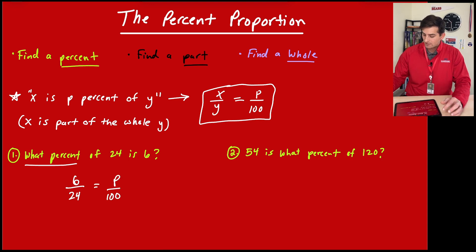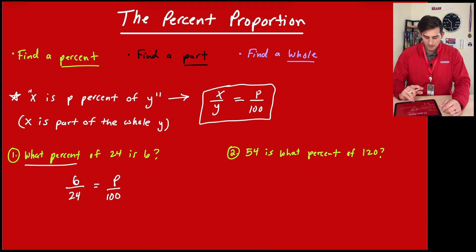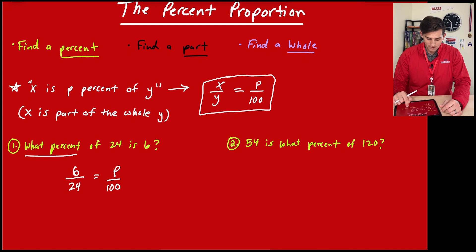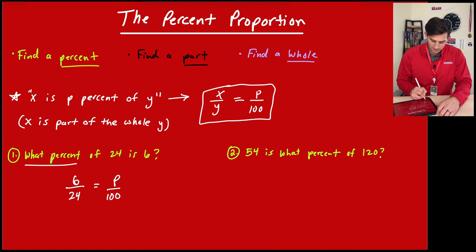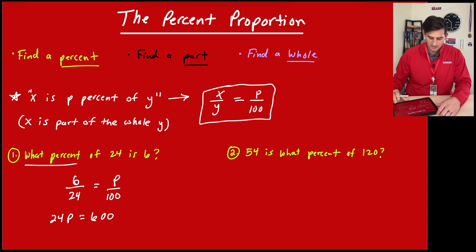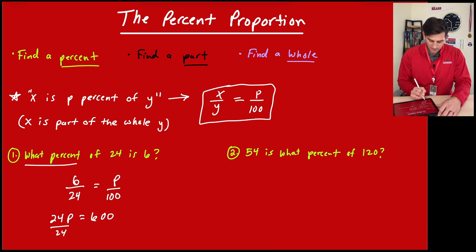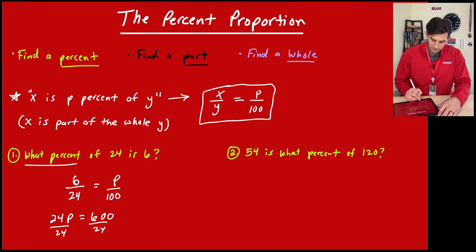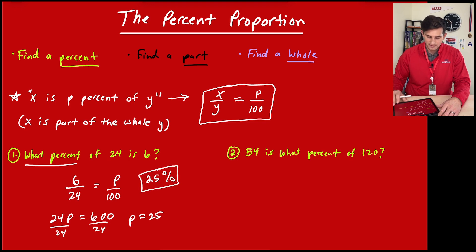I have a calculator so I'm not going to simplify right now. Cross multiplying gives us 24 times p equals 6 times 100, which is 600. Now divide both sides by 24: 600 divided by 24 gives us 25. So p equals 25, and we can write this as 25%.